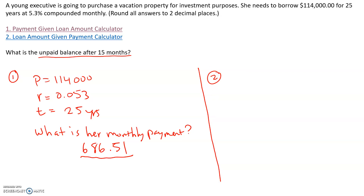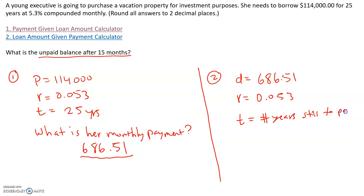In part two, we know her monthly payment is $686.51 and the interest rate is 0.053. T is the number of years still to pay. We want to find the unpaid balance, so we need to figure out how many more years she still needs to pay. She has a 25-year loan and she's made payments for 15 months. To convert 15 months into years, divide by 12, giving 15/12 years.